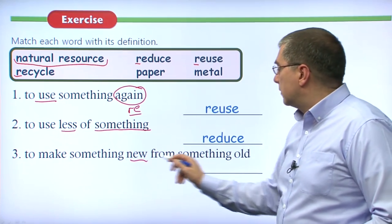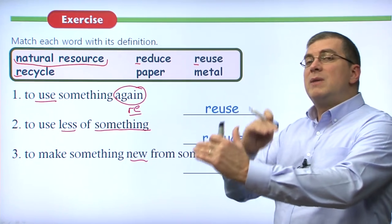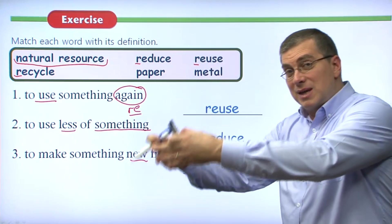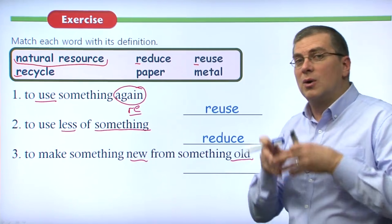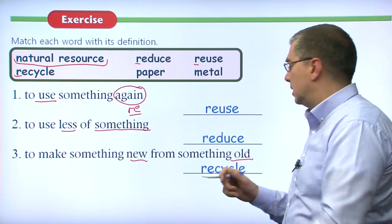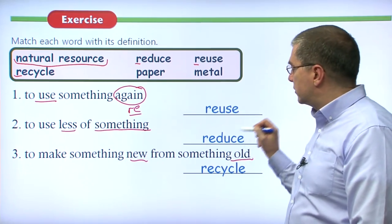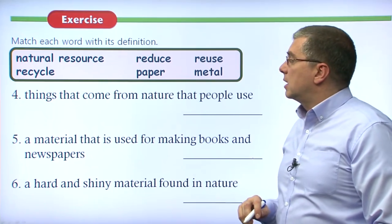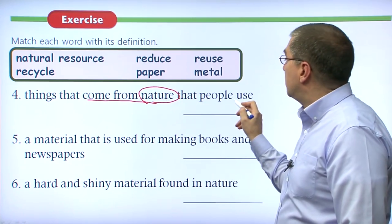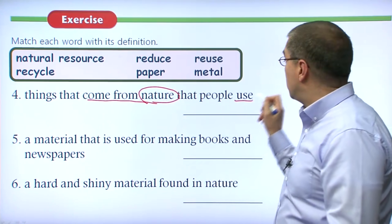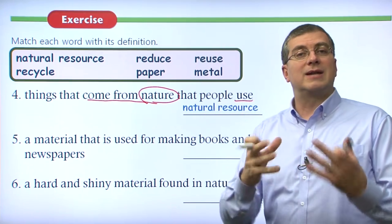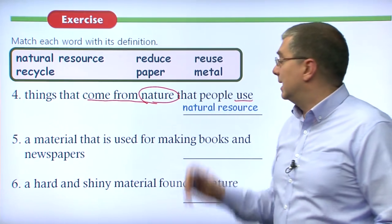Those are our three R's: reuse, reduce, recycle. Number four: things that come from nature that people use. They come from nature, so they're natural. People use them, so it's a resource. We say it's a natural resource. Number five: a material used for making books and newspapers — of course, the answer is paper. Newspapers are the papers that the news is printed on; books use paper as well. Number six: a hard and shiny material found in nature. If you go looking around, you can find this type of material in nature. It's metal.